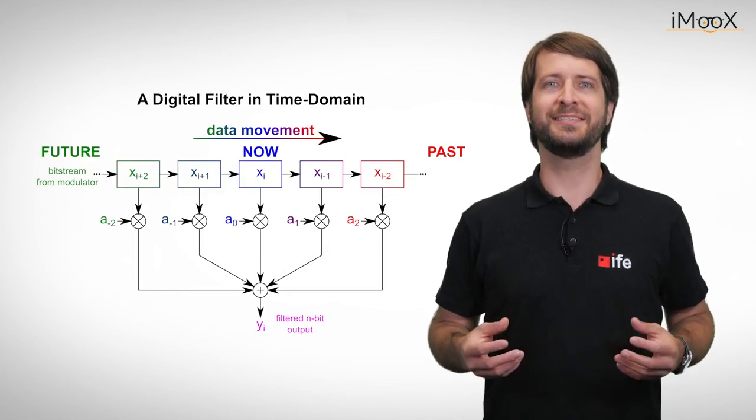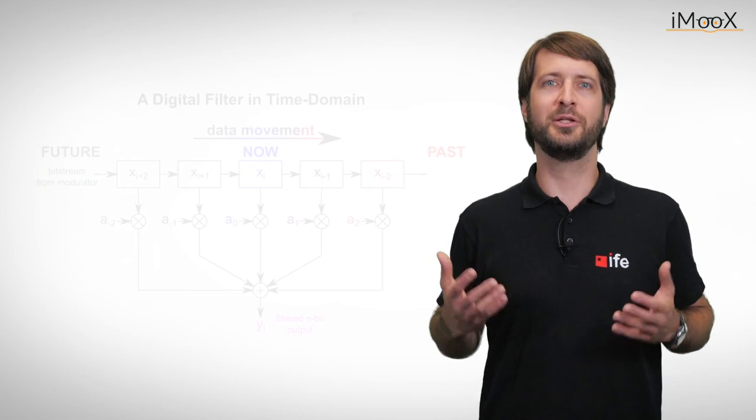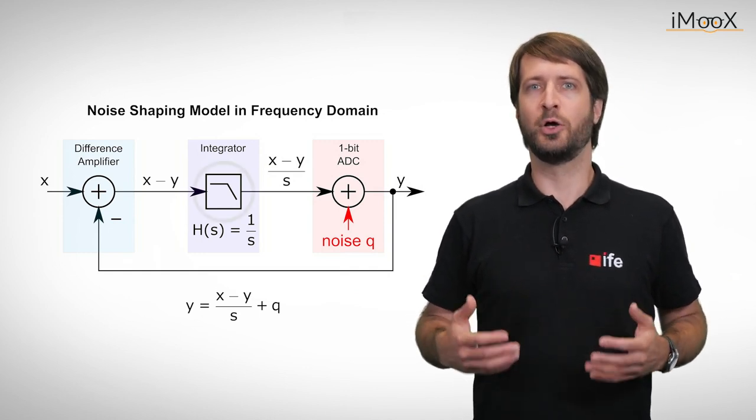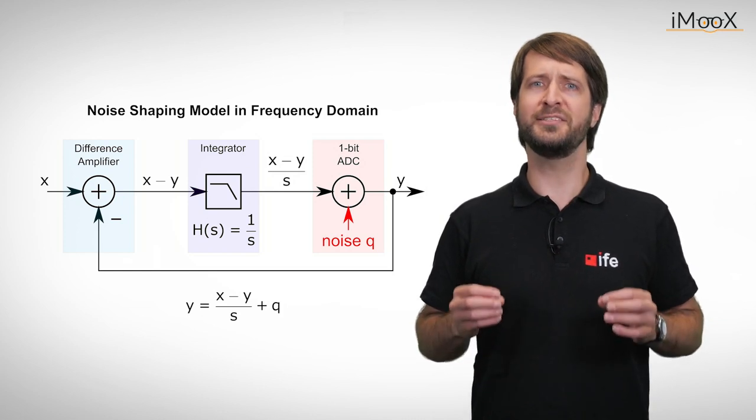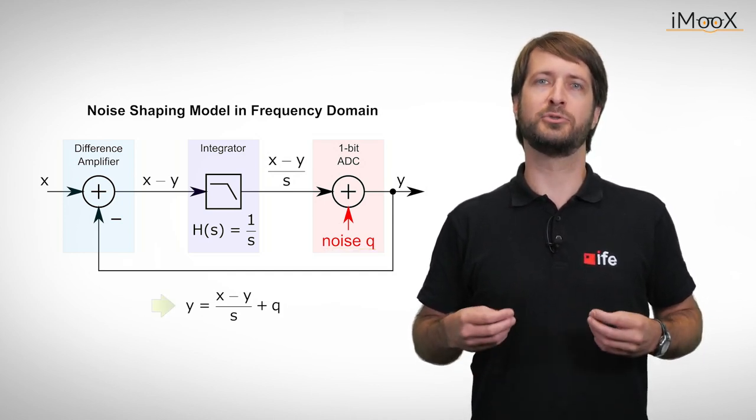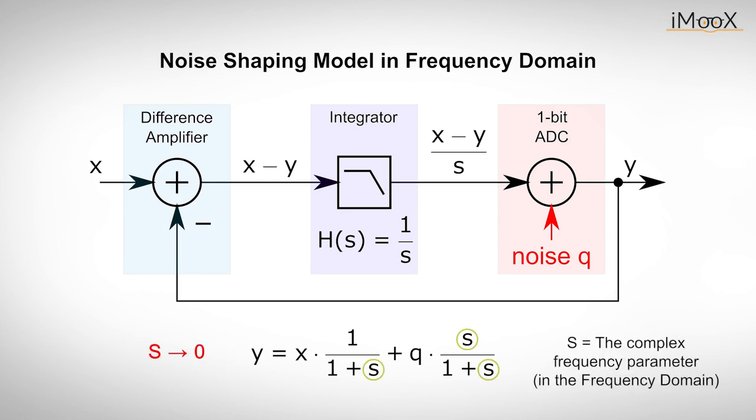This process will be even easier to understand if we make further simplifications and look at the whole process in the frequency domain. Just have a look at this frequency domain model of the modulator. As we saw in our last video, the integrator can be represented as a low-pass filter. In addition, we assume the 1-bit conversion process simply adds uniformly distributed quantization noise to the signal output. The output of the modulator can therefore be represented by the following equation. If we rewrite the formula, we can see that when the frequency approaches zero, the noise term goes towards zero and the output of the modulator goes towards the input value x. Conversely, when the frequency is increased, the noise term approaches q and the input signal term approaches zero.